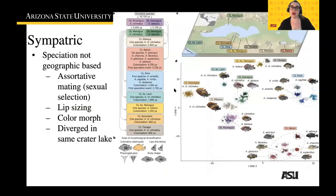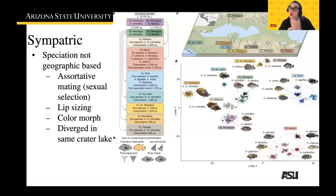Sympatric speciation is where you're actually in the same environment. An example involves crater lakes, where there are small subpopulations, but even the subpopulations of the main population get divided and speciated without any type of geographic interference or change. It is based on assortative mating where sexual selection is the defining factor.